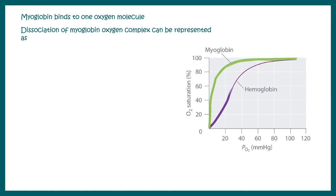Now let's talk about the oxygen binding curve of myoglobin and hemoglobin. Myoglobin has a hyperbolic curve, similar to a Michaelis-Menten equation, whereas hemoglobin has a sigmoidal curve. To understand the oxygen binding kinetics: oxygen binds to myoglobin forming a complex called MbO₂, which can dissociate back to myoglobin and oxygen, and we define a dissociation constant Kd for this reaction.